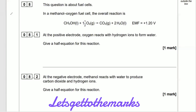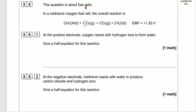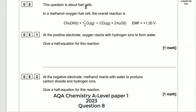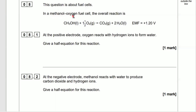Welcome to Let's Get to the Marks. This question is about fuel cells — AQA Chemistry Paper 1, Question 8, 2023. In a methanol-oxygen fuel cell, the overall reaction is: methanol plus 1.5 oxygens goes to carbon dioxide and two moles of water. The EMF is +1.20 volts. Question 8.1: at the positive electrode, oxygen reacts with hydrogen ions to form water — give a half equation.